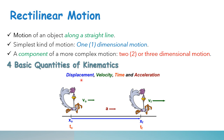When you say displacement, it is a vector quantity that refers to the change in position with direction. The word displacement implies that an object has moved or has been displaced. The scalar counterpart is the distance. For example, this chicken moved from its initial position x₀ to its final position xf.